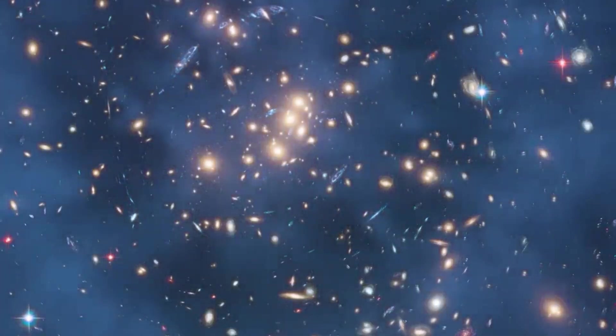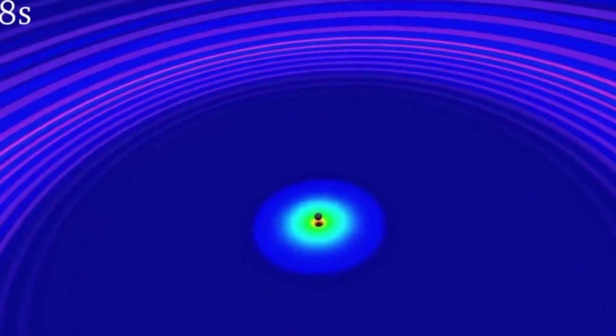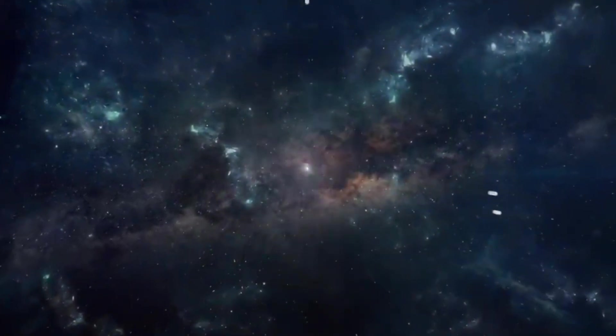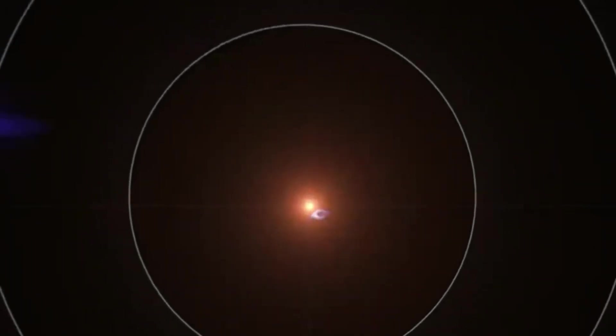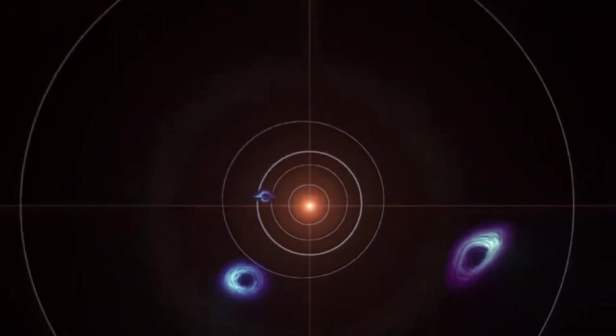The universe that existed before the big bang might have been filled with its own wonders. It might have had gorgeous galaxies, amazing planets, and incredible forms of life that we can't even imagine. All of that was destroyed to make room for our universe. And someday, our universe will be destroyed to make room for the next one. It's a humbling and terrifying thought, but it's also kind of beautiful. We're not accidents in a meaningless universe. We're part of an eternal cycle of creation and destruction that connects us to everything that came before and everything that will come after. The atoms in our bodies might have once belonged to stars in the universe that existed before ours.